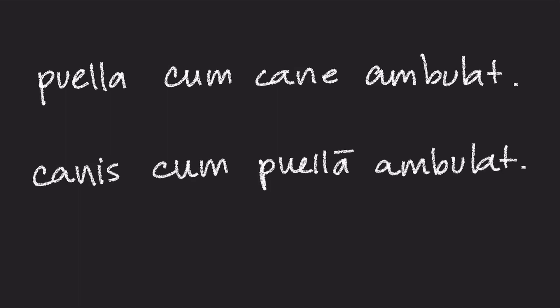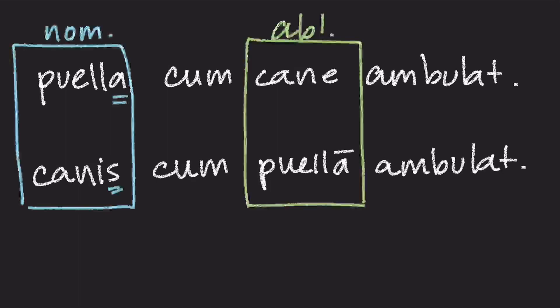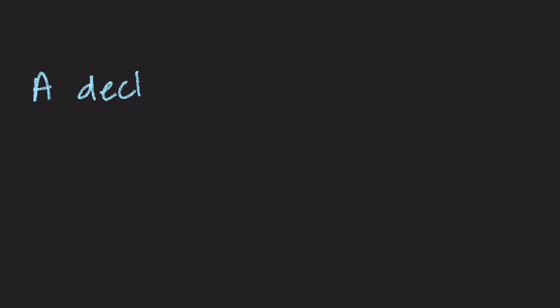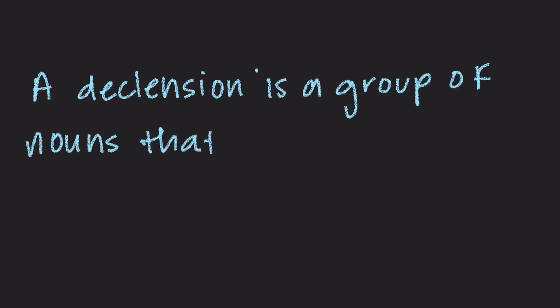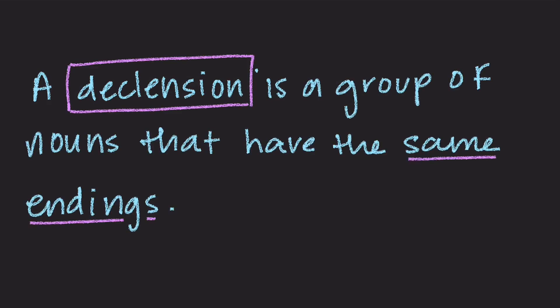So why do the endings look different in Puella and Kanes? If Puella is nominative and Kanes is nominative, why do they have different endings? Why do Kane and Puella have different endings if they're both ablative? Well, the reason is because Puella and Kanes are in different declensions. A declension is a group of nouns that all have the same endings. The ending of a noun depends on the declension, the case, and the number — number being whether that noun is singular or plural.